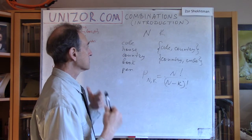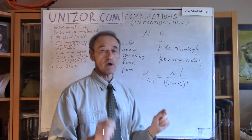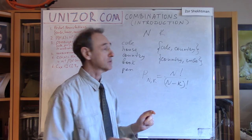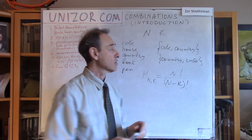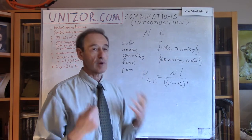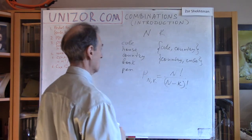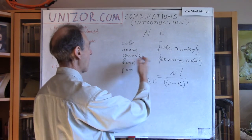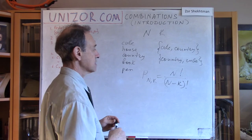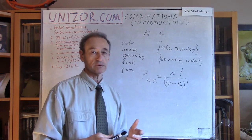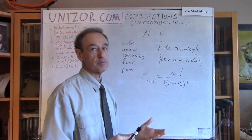What's the difference between partial permutation and combination? One very important and really small difference: we don't care about the order in combinations. So these two actually represent the same combination. Any other pair of these two objects, if we don't care about their order, represents a combination.